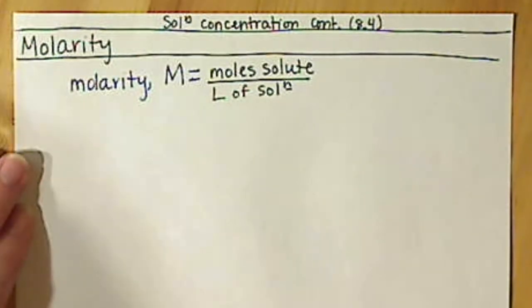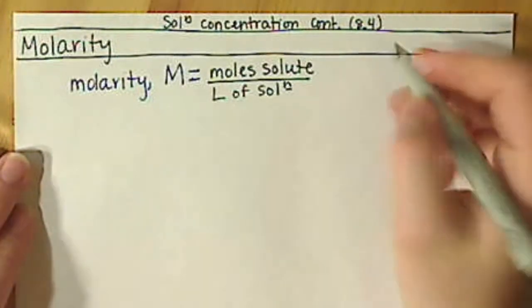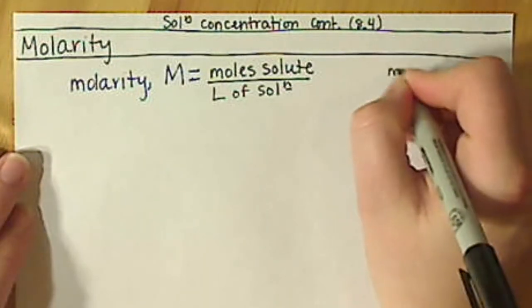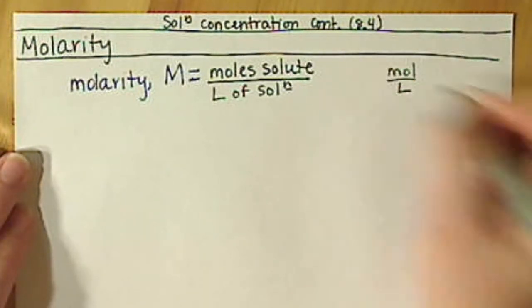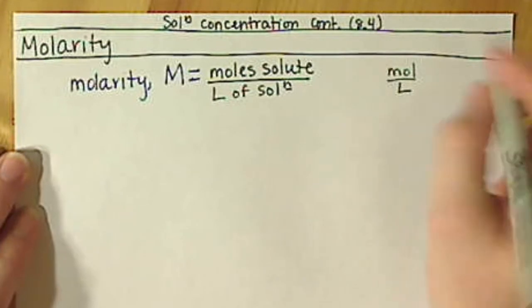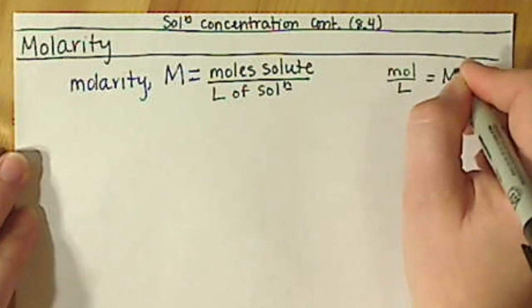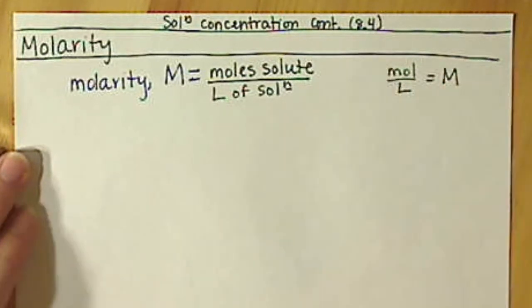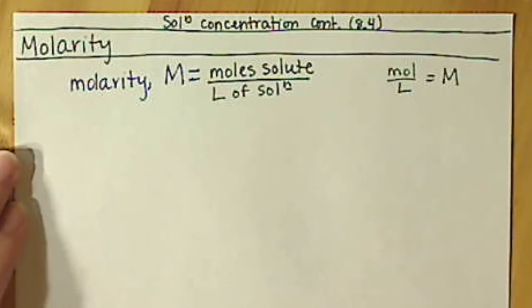So basically our units end up being moles per liter, which is equal to our capital M, and they can be used interchangeably.